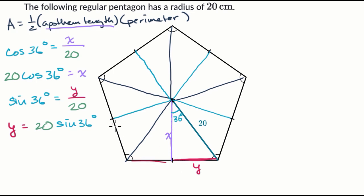That's one, two, three, four, five, six, seven, eight, nine, ten. So the perimeter, I'll just call it p, is going to be 10 times this. So that's going to be 200 times the sine of 36 degrees.